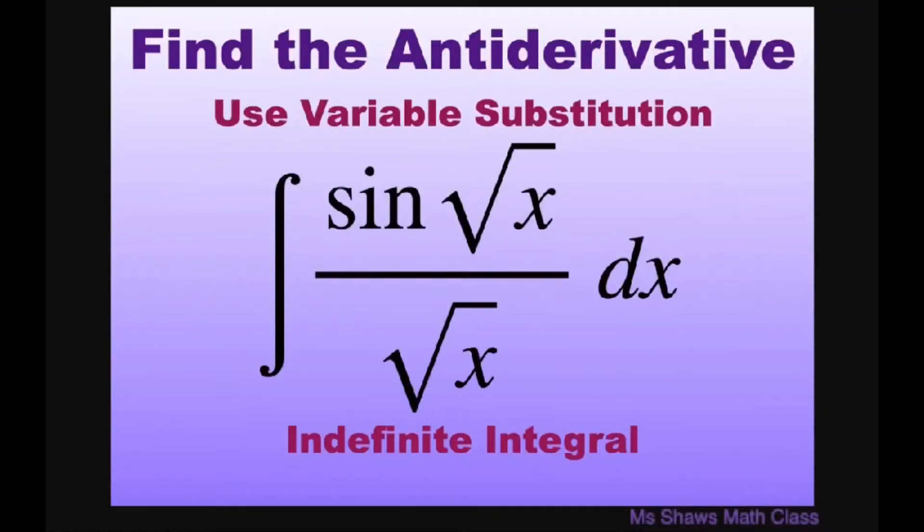Hi everyone! We're going to find the antiderivative using variable substitution for the integral of sine of square root of x divided by square root of x dx.